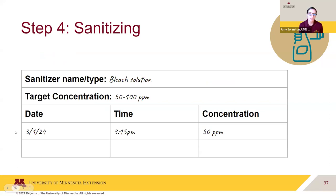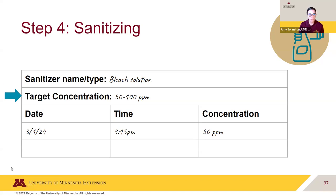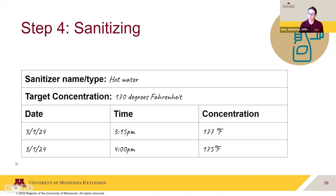Documentation of the sanitizer solution is a best practice and may be required in some inspected food businesses. A log should always list the type of sanitizer solution and include the target concentration so you don't have to remember what you're aiming for when you check the solution — this leaves less room for error. Document your results. You can do a similar log for hot water sanitizing, including the target temperature and how frequently you are monitoring it.